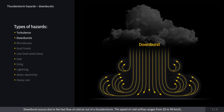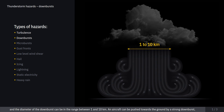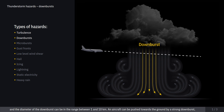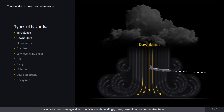Downburst occurs due to the fast flow of cold air out of a thunderstorm. The speed of cold air flow ranges from 20 to 90 km per hour, and the diameter of the downburst can be in the range between 1 and 10 km. An aircraft can be pushed towards the ground by a strong downburst, causing structural damages due to collisions with buildings, trees, power lines, and other structures.